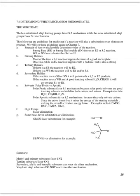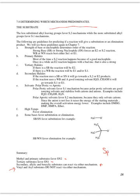In summary for substitutions: methyl and primary substrates favor SN2; tertiary substrates favor SN1. Secondary, allylic, and benzylic substrates can react either way, SN2 or SN1. Vinyl and aryl substrates do not react via either mechanism because an sp3-hybridized carbon is required. Remember, it must be an sp3-hybridized carbon for substitution reactions to proceed.